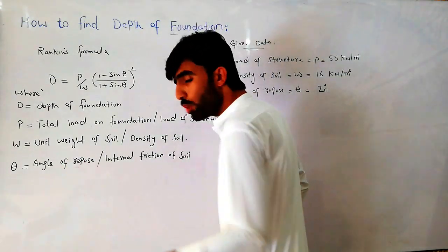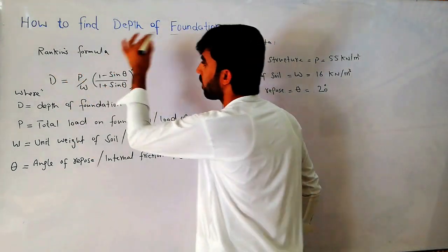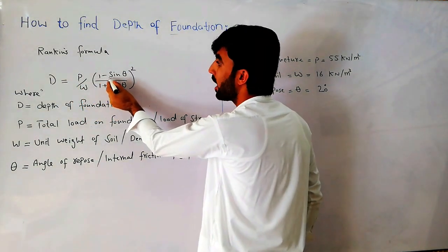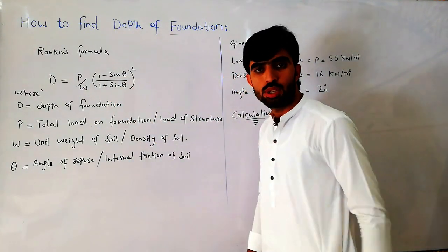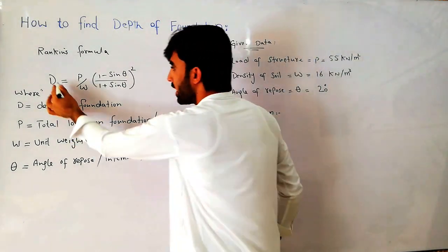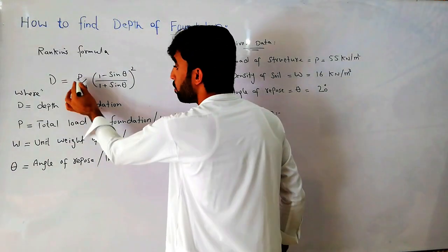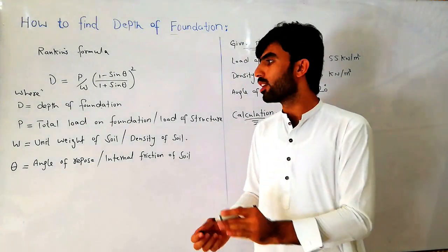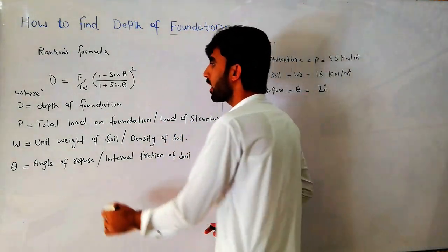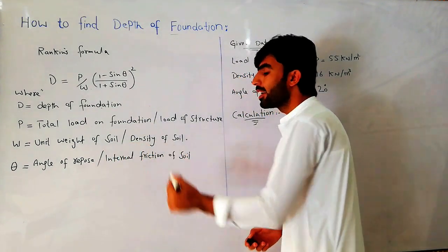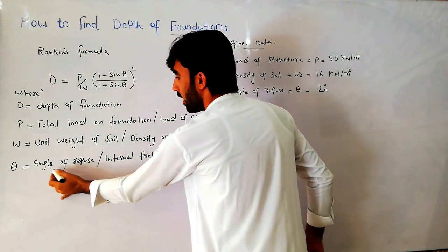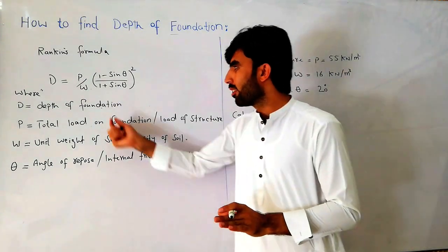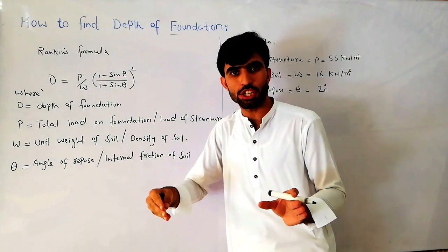We can find depth of foundation using Rankine's formula. The formula is: D = (P / W) × ((1 − sin θ) / (1 + sin θ))². Here, D is the depth of foundation, P is the total load on the foundation (load of the structure), W is the unit weight or density of soil, and θ is the angle of repose or internal friction of the soil.